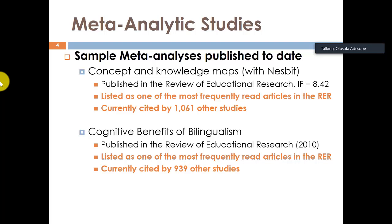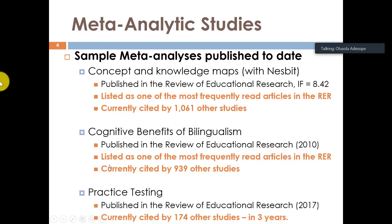We should tell politicians the direction in which they can go in public policy, based on evidence. When you conduct a meta-analysis, you aggregate research from hundreds of thousands of studies, so you have the evidence that can help shape policies and politics. More recently, in 2017, we published another meta-analysis in the Review of Educational Research — by the way, that is the number one journal in terms of high impact in the field of education.